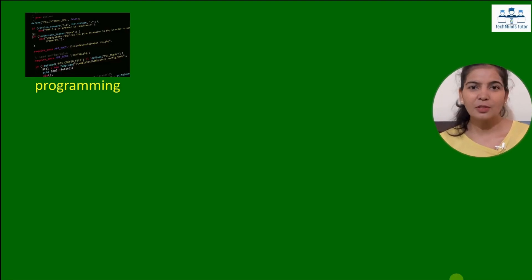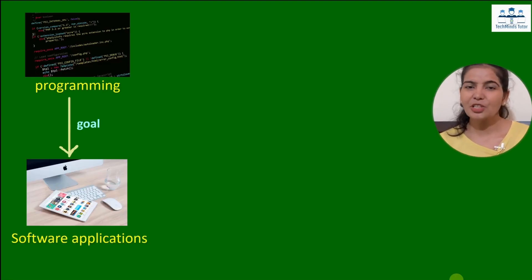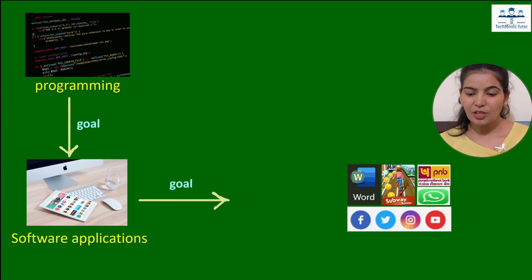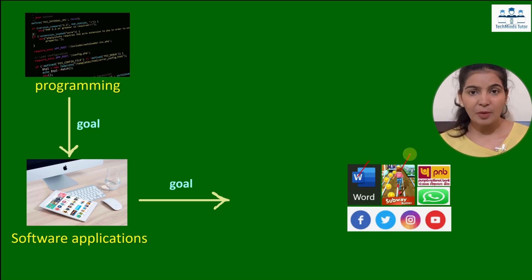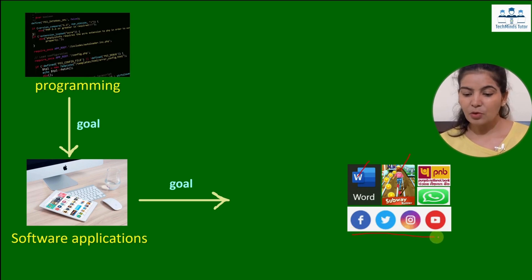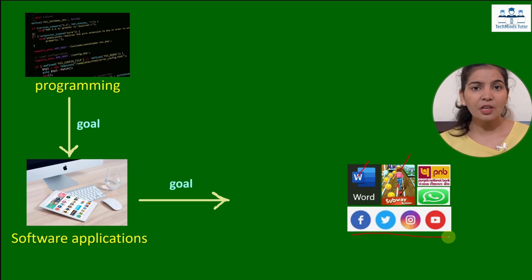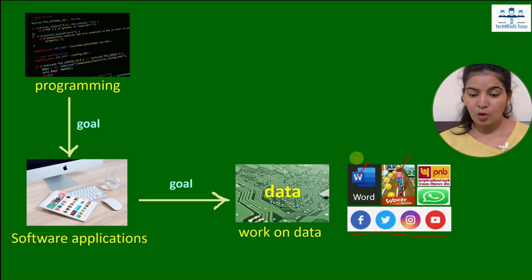Why do programming? The purpose of programming is to create software applications, and the purpose of software applications is to perform different tasks. We use word applications for creating and printing documents, game apps for entertainment, and social media apps for sharing pictures and videos. All of these apps are working on some data.